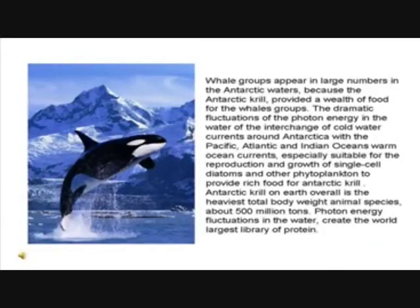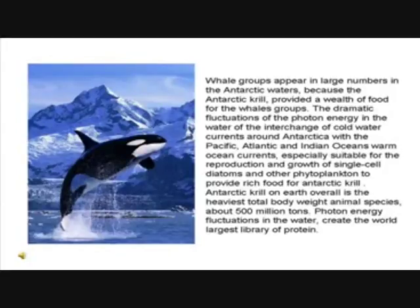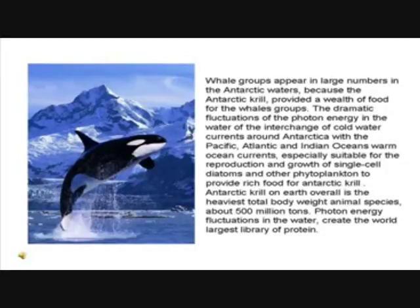Whale groups appear in large numbers in the Antarctic waters because Antarctic krill provide a wealth of food for whale groups. The dramatic fluctuations of photon energy in the water at the interchange of cold water currents around Antarctica with the Pacific, Atlantic and Indian Ocean's warm ocean currents are especially suitable for the reproduction and growth of single-cell diatoms and other phytoplankton, providing rich food for Antarctic krill. Antarctic krill on Earth overall is the heaviest total body weight animal species, at about 500 million tons. Photon energy fluctuations in the water create the world's largest library of protein.